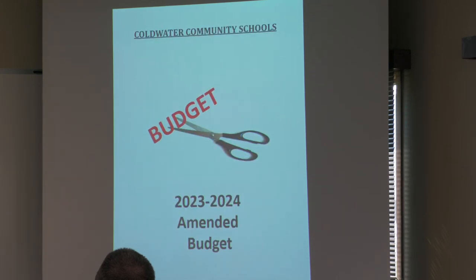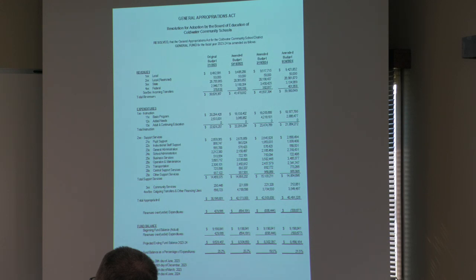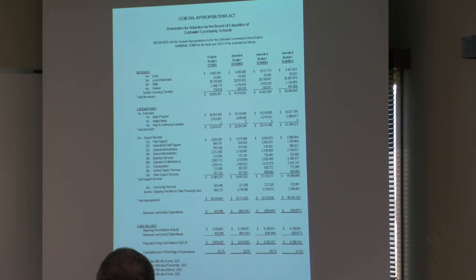Moving into the final amended budget for this year: we had a slight decrease in local revenue. At the end of the year, we're always matching up expenses to revenues with grant sources, because grants have to equate to zero — you have to decrease your expenses to match the revenue received. That accounts for a lot of the shifting, but as you can see, there are just slight differences from the amended amount.